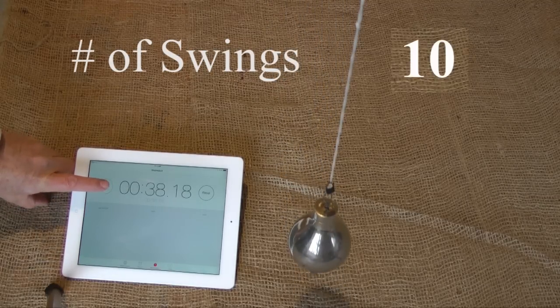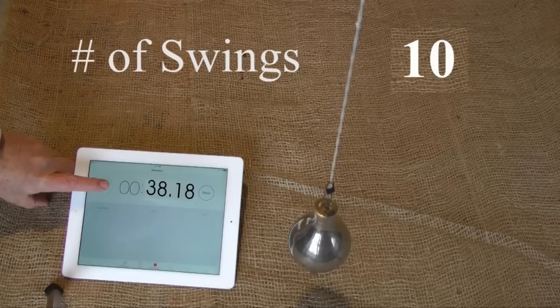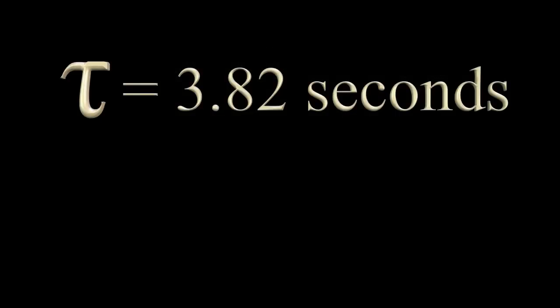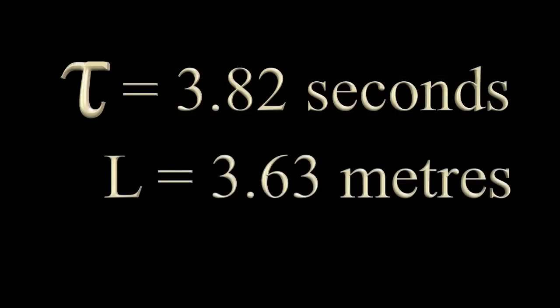Our timer shows 38.18 seconds for 10 complete swings. Dividing by 10 and rounding, we get a period of 3.82 seconds for this 3.63 meter pendulum.